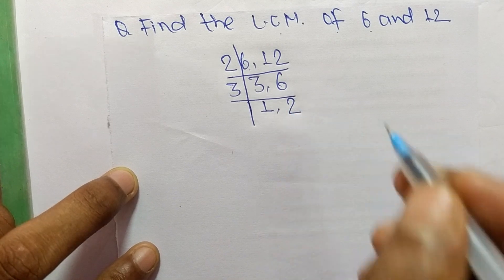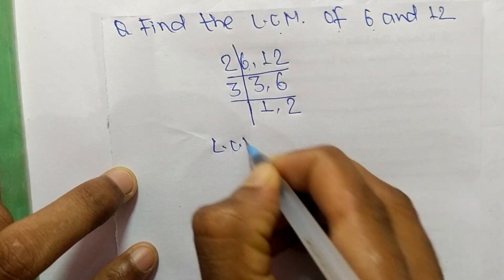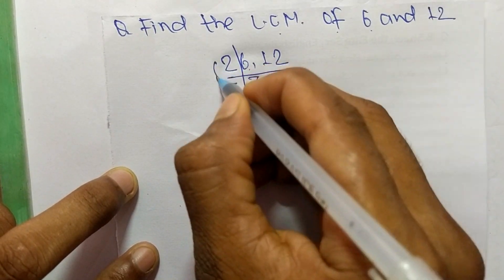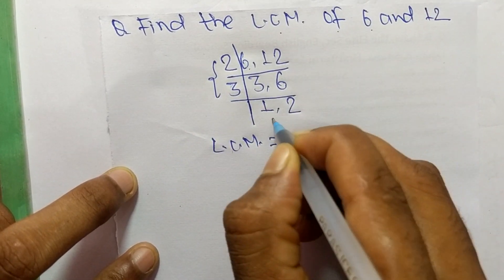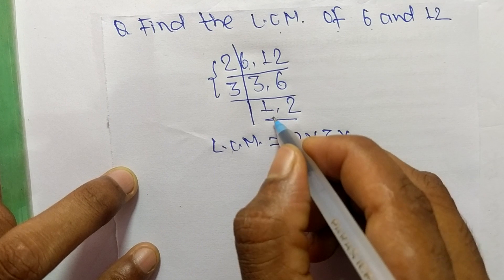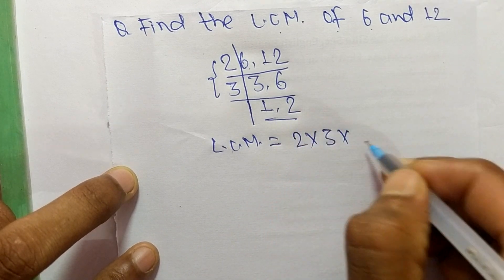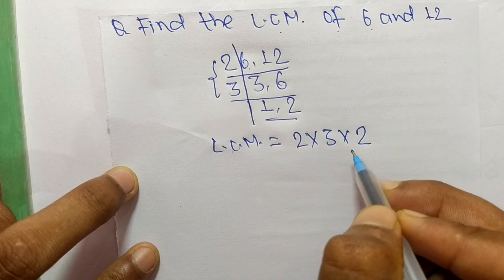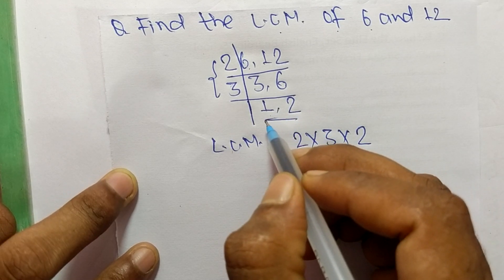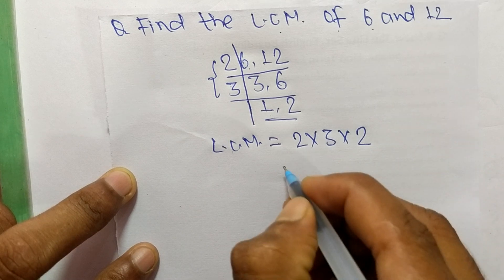So LCM is equal to, from this part it is 2 times 3, and from here we have 1 and 2, but we take only 2 and we neglect 1 because by multiplying any number with 1 we get the same result.